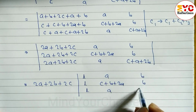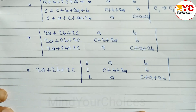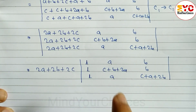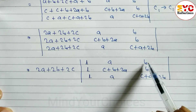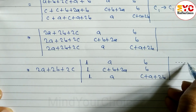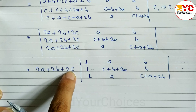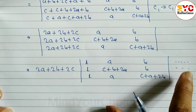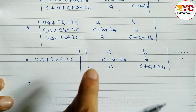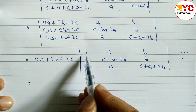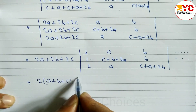We can take 2(A+B+C) common from the first column. After taking 2(A+B+C) common, C1 becomes all ones. Now to make two elements zero, we subtract rows: R1 → R1 − R2. One minus one gives zero, B minus B gives zero.